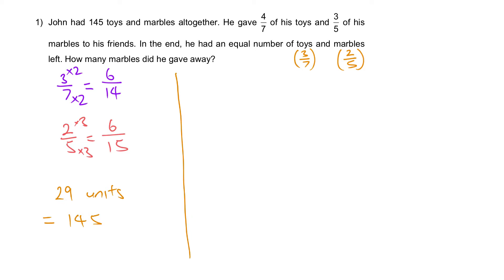Step one: 29 units is equal to 145. One unit will be 145 divided by 29, which gives you 5. Now, what do they want us to find? How many marbles did he give away?